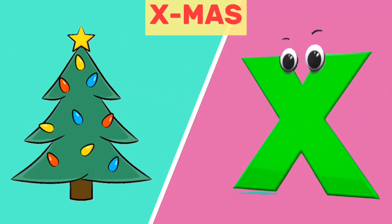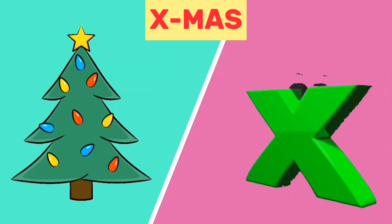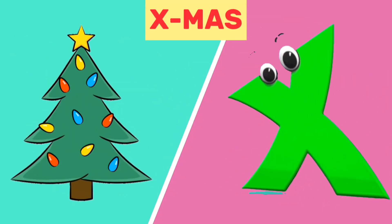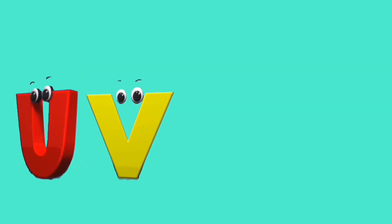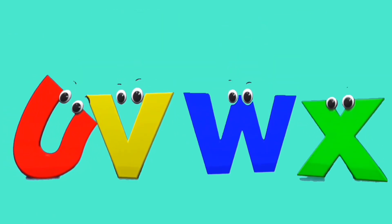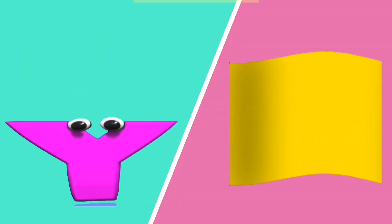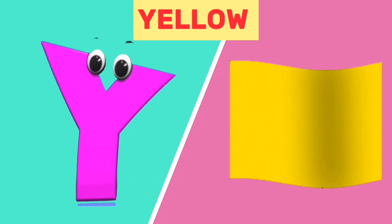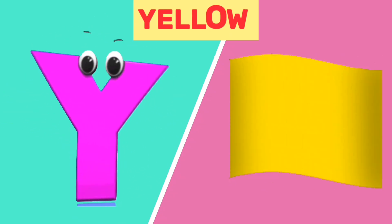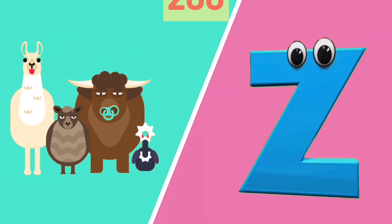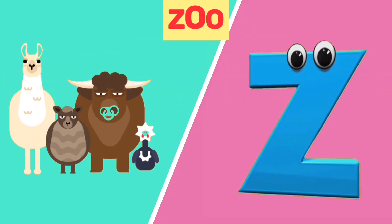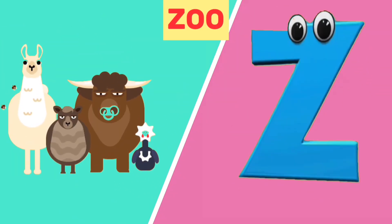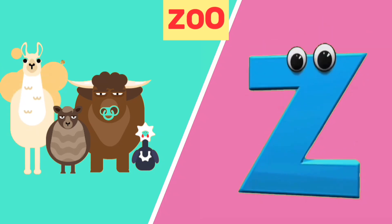X is for Xmas. X, Xmas. Y is for yellow. Y, yellow. Z is for zoo. Z, zoo.